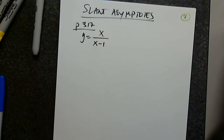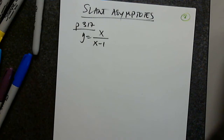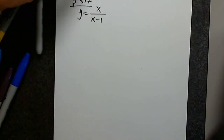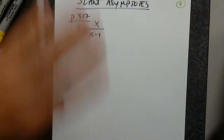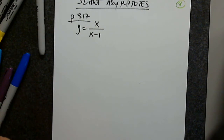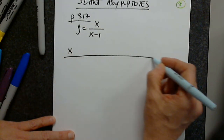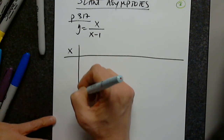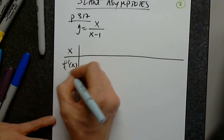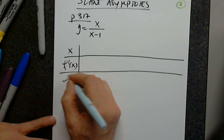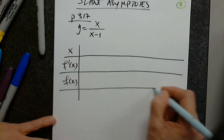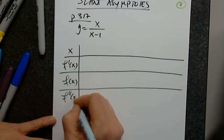We already know this graph. We can picture it because of pre-calculus — this was super discussed in pre-calculus. But now let's suppose we don't know anything about it. Let's say we have no idea what this means or how the graph will look like. Let's get our table started. So this is f prime, in the middle we have f of x, and then f double prime.